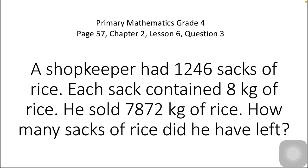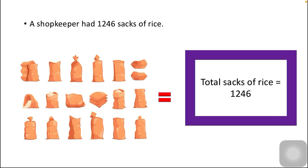After reading a word problem, what you need to do is identify what is given and what we need to find. This is the first step of the solution. The first statement is that a shopkeeper had 1246 sacks of rice. I've taken a random image — let's assume that it represents 1246 sacks of rice.